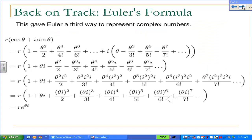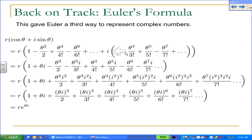This gave Euler a third way to represent complex numbers. We had our polar form: r(cosθ + i sinθ). What I've done in the next line is replace cosθ with its Taylor series expansion and sinθ with its Taylor series expansion. This ends up with something that looks pretty complicated but actually simplifies very quickly. In the next line, I multiply out the i and expand the brackets, then reorder the terms in increasing powers of θ. You end up with something messy-looking, and we want to simplify it.